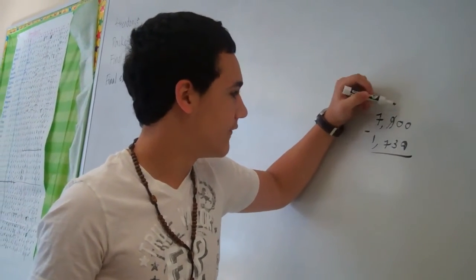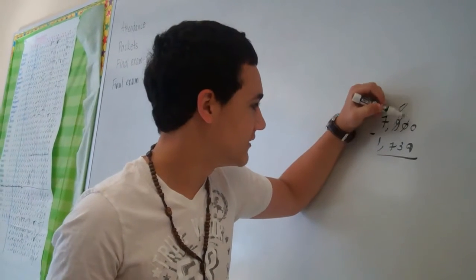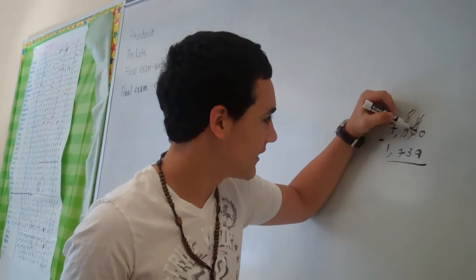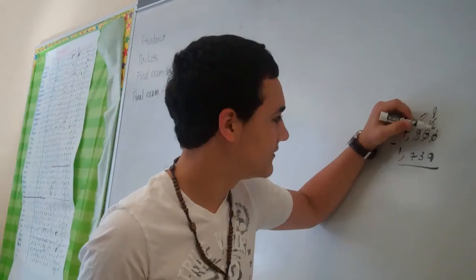Take away from 9, it becomes 8, the 0 becomes 10, then you take away again, it becomes 9, the 0 becomes 10.